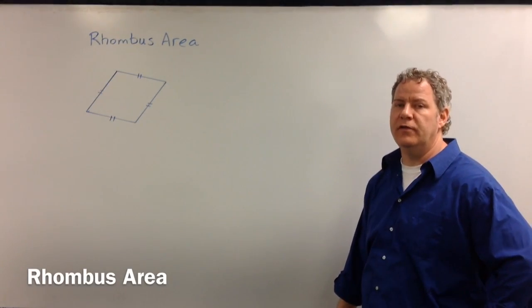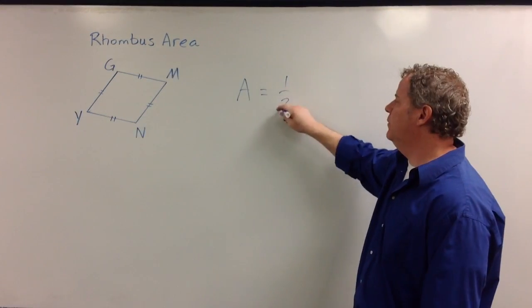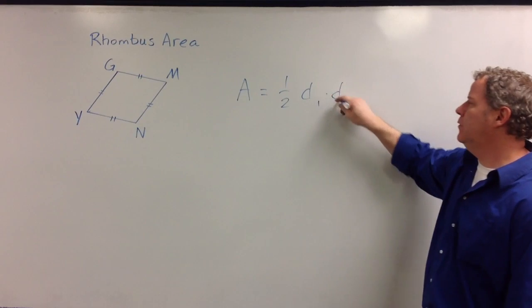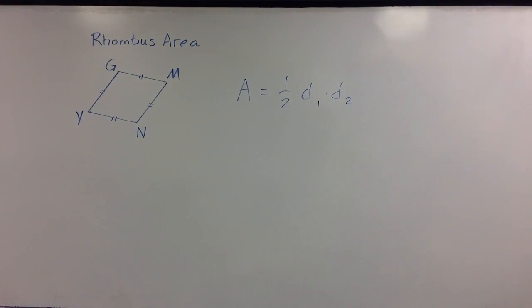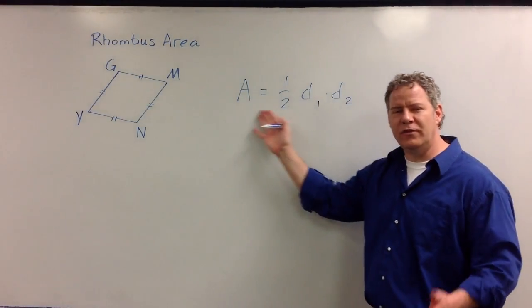A rhombus has four congruent sides. Where does that come from? Where does this come from?